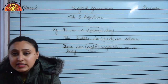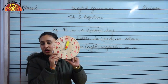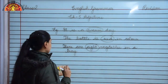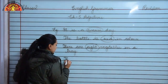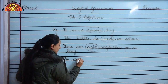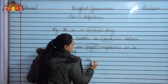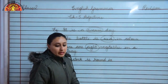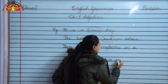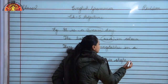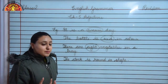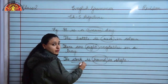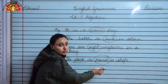Now children, here you can see a clock. What is the shape of the clock? The clock is round in shape. This shows us that the shape of the noun also describes it. Round describes clock. The adjective for clock is round.